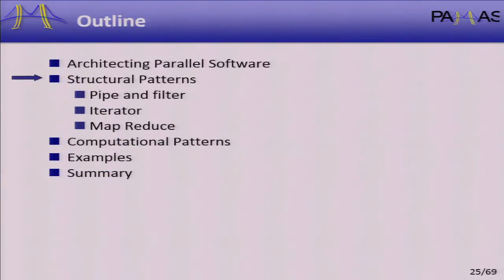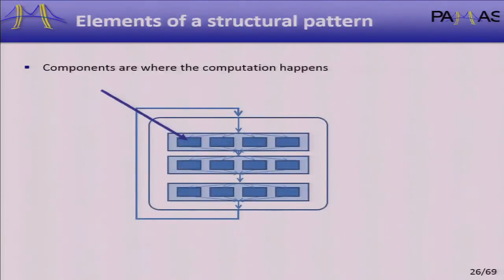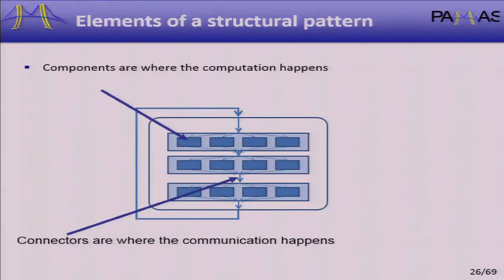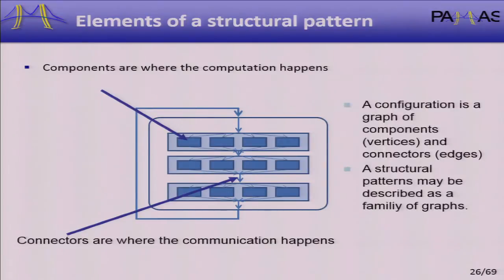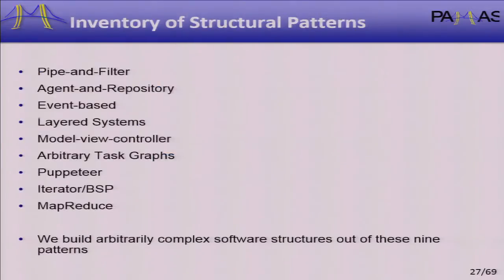Components are where all the computation happens — these little boxes, which can be hierarchical. Connectors are where the communication happens, and the configuration is just an assembly of components and connectors, describable as a family of graphs. I claim you can build arbitrarily complex software — in fact any software — out of these structural patterns.